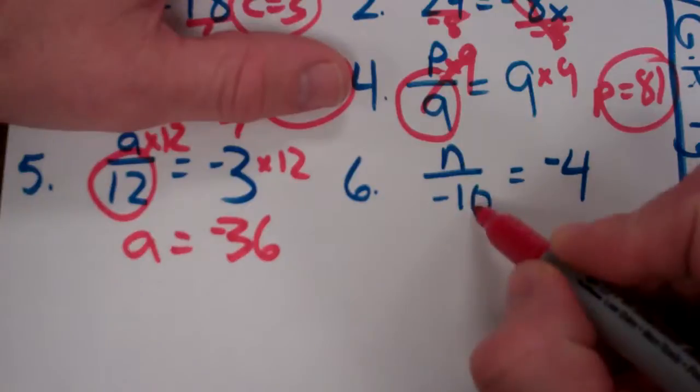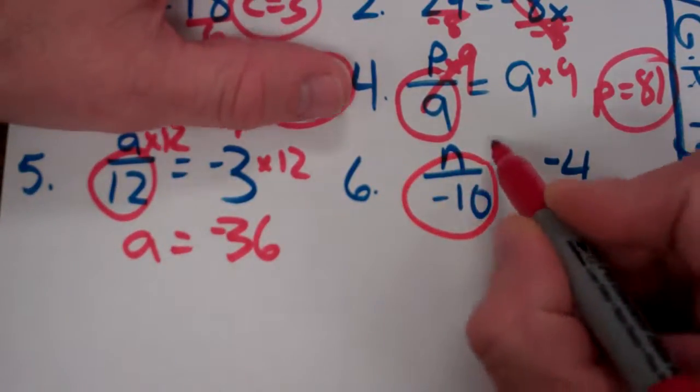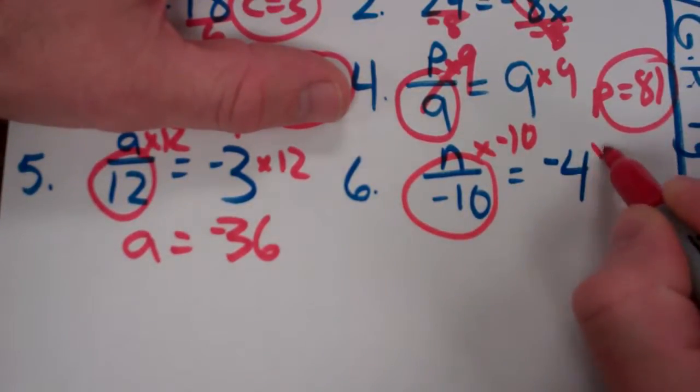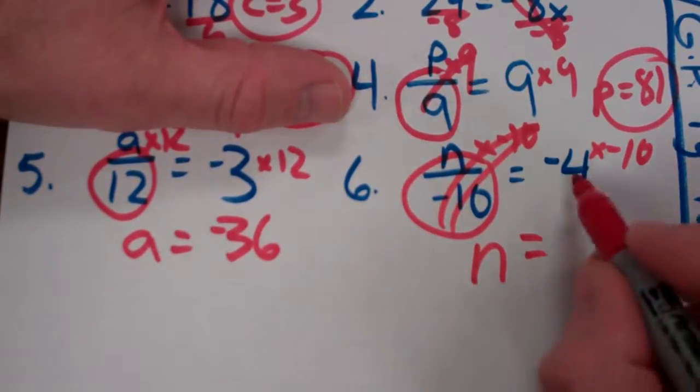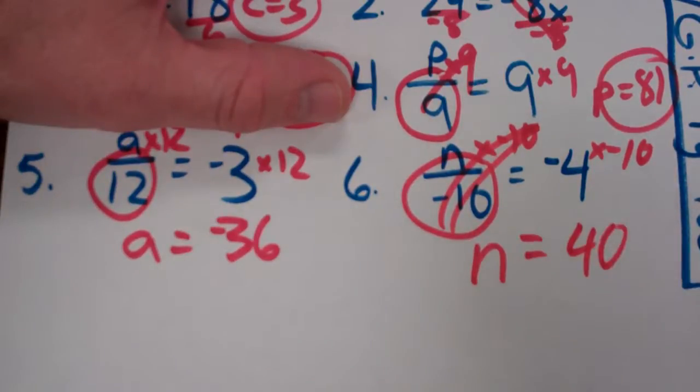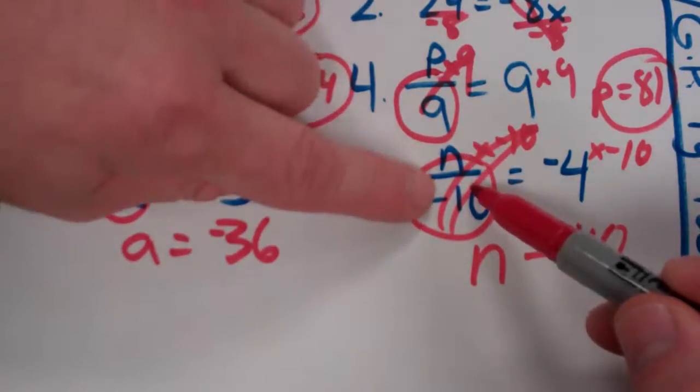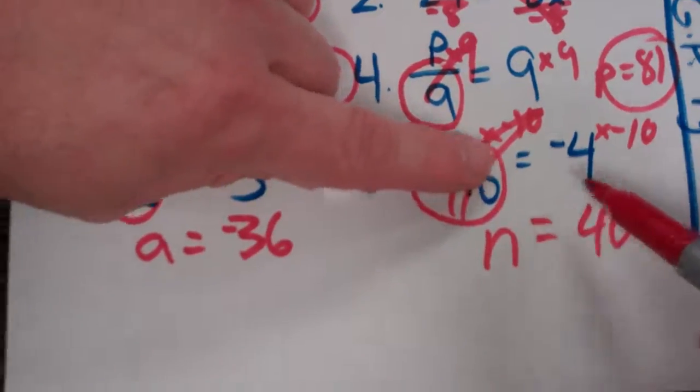Once again, they divided by negative 10. So I'm going to multiply by negative 10 on both sides. Those cancel out on this side. So I'm just left with an N on this side. On this side, I'm left with 40. And if you do that, 40 divided by negative 10 is negative 4. And it works out.